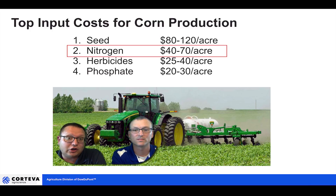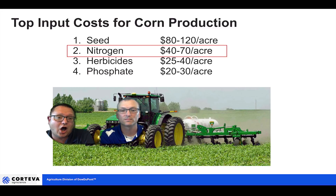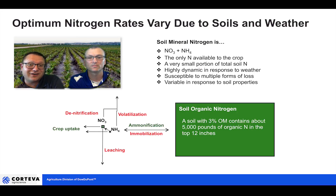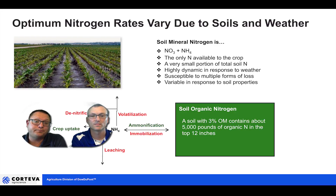Most growers are going to look at nitrogen decisions as one of the most important they make each year, due in part to the fact that nitrogen is going to be one of the top production costs for corn production. Nitrogen is also one of the most uncertain and difficult nutrients to manage because it's highly dynamic in the soil, and weather — precipitation and temperature in particular — determines how much nitrogen is available to the crop. In some cases, the amount of fertilizer we apply isn't always available.